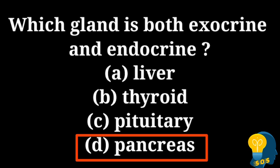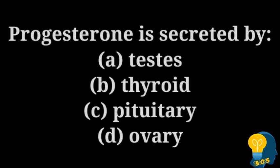When we talk about pancreas as an endocrine gland, it secretes the hormones called insulin and glucagon, which are responsible for controlling the blood sugar level in the body. Liver, thyroid, and pituitary gland act only as endocrine glands, not exocrine. So the correct answer is option D: pancreas.